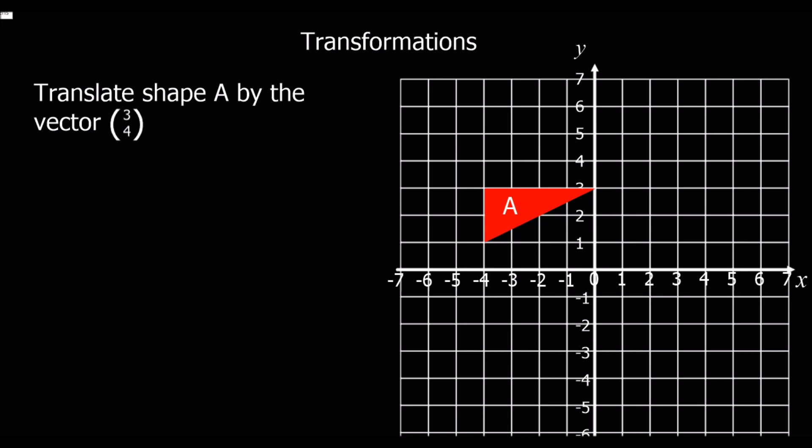When we're being asked to translate a shape, we're being asked to move it. So this 3-4 here is vector notation. The 3 means how far left or right, so this is left or right. And then we have the second one, the 4, this is up or down.